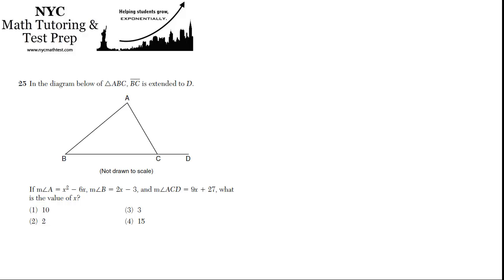Problem 25. In the diagram below of triangle ABC, BC is extended to D. If the measure of angle A is x squared minus 6x, so that's this guy, x squared minus 6x, and the measure of angle B is 2x minus 3, and the measure of ACD, so that's this external angle, is 9x plus 27, then what's the value of x?